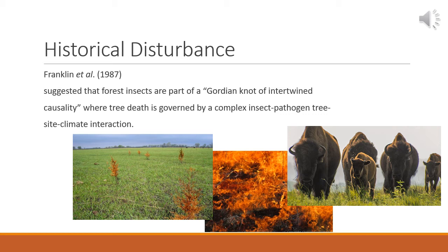In native forest communities, Franklin et al. 1987 talked of the complex insect-pathogen-tree-site-climate interactions that are intertwined in the causality governing tree mortality. This concept focuses on the main causes of abiotically driven vigor loss, creating the scenario for establishing populations of insects and diseases in trees.